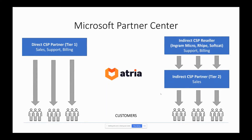To recap on Microsoft Partner Center — this is the key thing we use for all of our automation. Atria sits in the middle. There are two different types of Microsoft partner: either a direct CSP partner, where you get a bill from Microsoft and you're selling, supporting, and billing the services to customers; or the indirect model, where you're buying your licensing through an indirect CSP reseller or distributor such as Ingram Micro or SoftCat, who handle your support and billing.